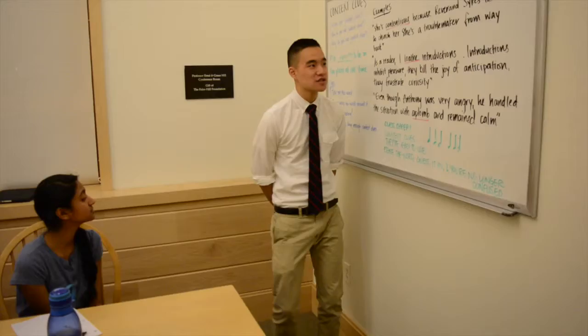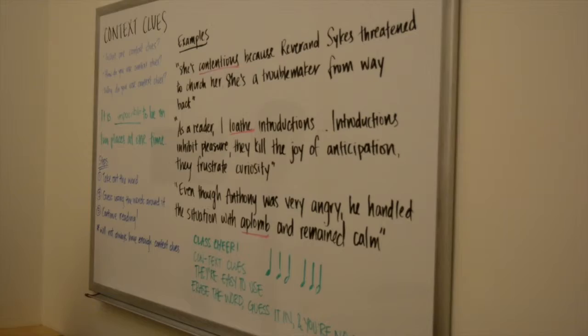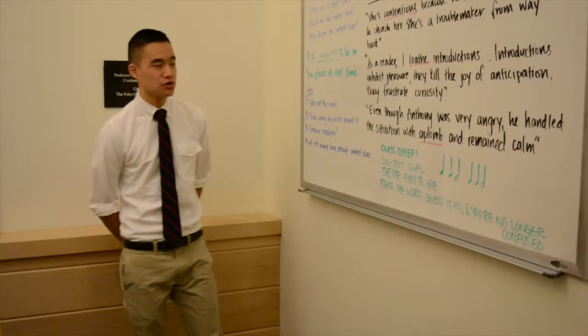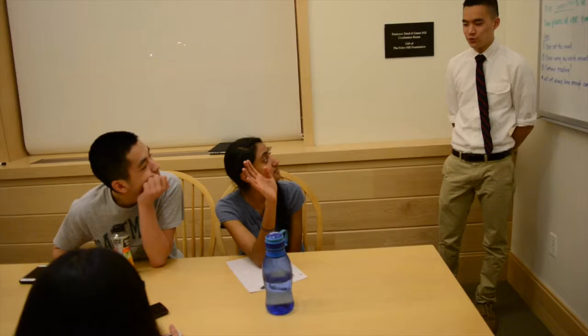In our first example, I took this from To Kill a Mockingbird. She's contentious because Reverend Sykes threatened to church hurt. She's a troublemaker from way back. So why don't you guys with a partner sit next to you and just discuss what you guys think it might mean, and identify key words that really bring you to that conclusion as to what contentious might mean. Okay, does anyone want to tell the class what they figured out?